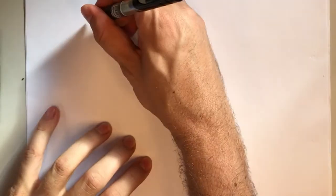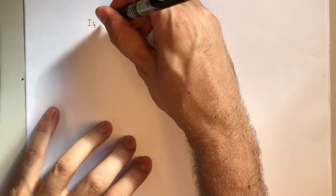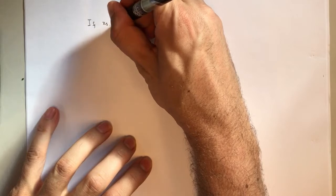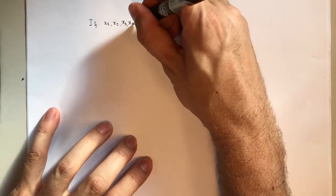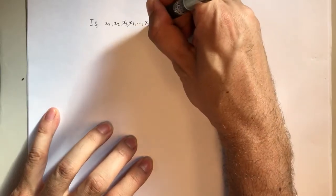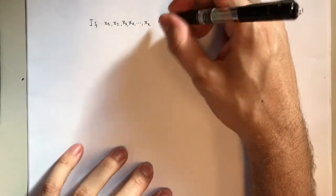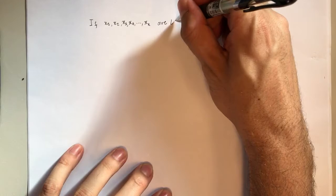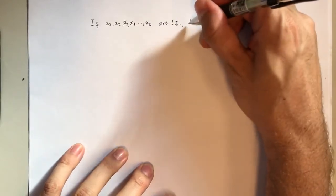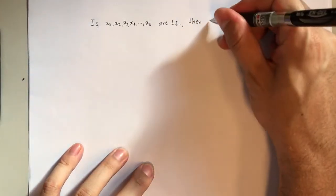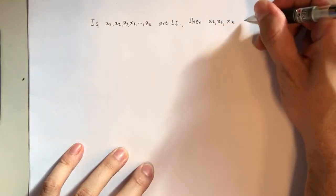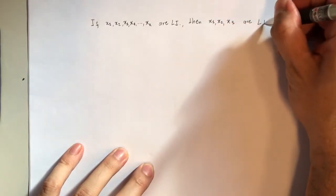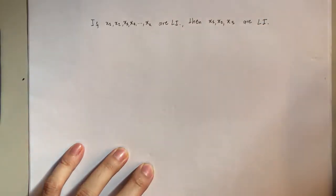We're going to show that if x1, x2, x3, x4, up to xk are linearly independent, then x1, x2, x3 are linearly independent. How do we show that?